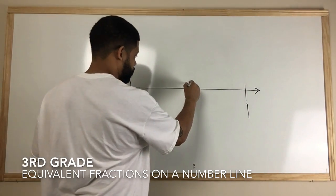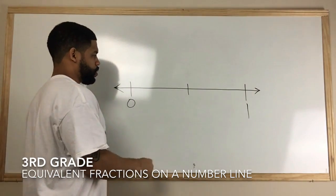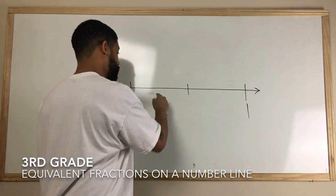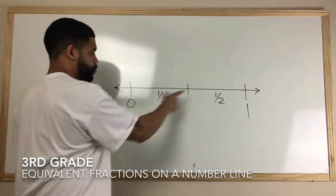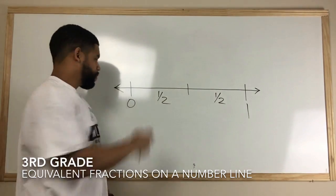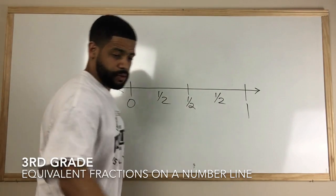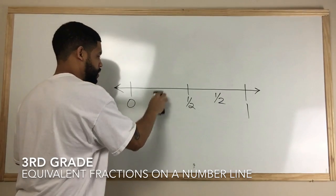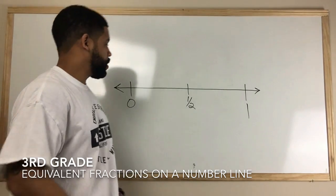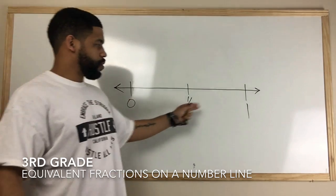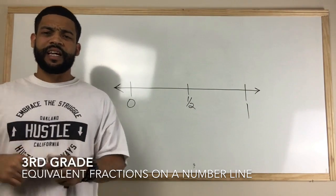We're going to keep this in black and separate this number line into two pieces. I have one half here and one half here — so if I have two pieces, halfway between zero and one would be one half. So now I have zero, one half, and one on the number line.